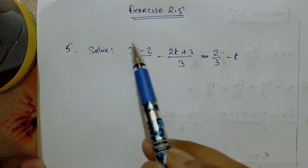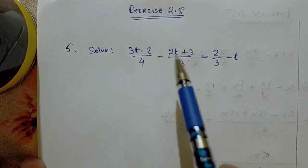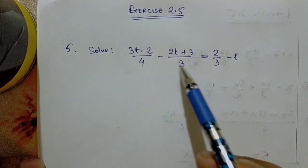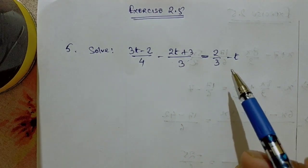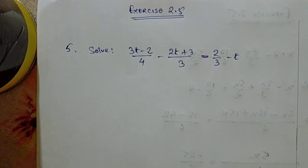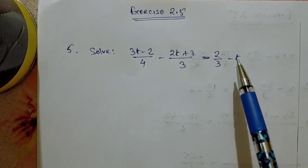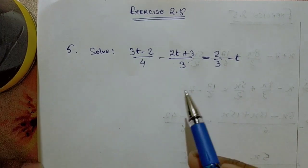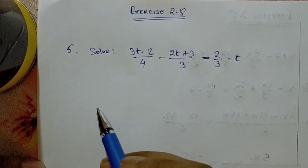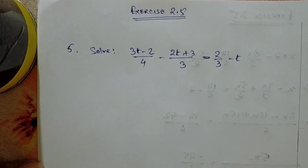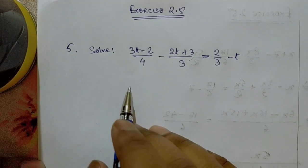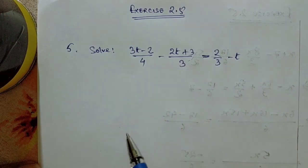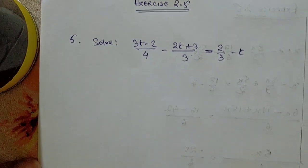Even if we don't transpose all the variable terms to one side, sometimes it becomes a little bit more convenient to solve. So we will try that here. Without transposing this t over to this side, we will try to solve. Let's see what happens.